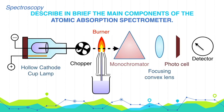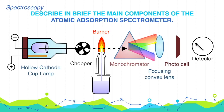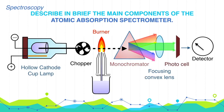The transmitted radiation is incident on the prism connected to the photomultiplier tube, where a current is produced. The photomultiplier tube is connected to the readout meter, which gives the absorbance. By applying Beer-Lambert's law, we can determine the concentration of a solution from the absorbance value.